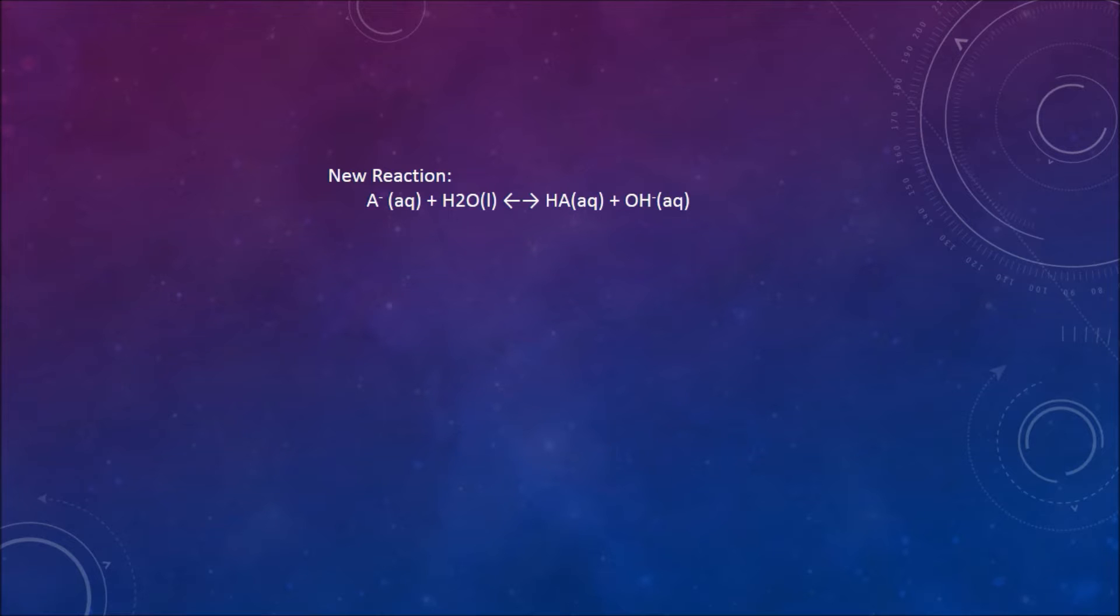Your new reaction is the conjugate base reacts with water to form hydroxide and HA. To find the KB of the reaction, you must know that KW equals the K acid times the K base, and KW is always 1.0 times 10 to the negative 14. In this case, you have Ka 1.8 times 10 to the negative 5. You divide that by the KW, and the KB that you get is 5.5 times 10 to the negative 10.